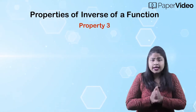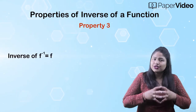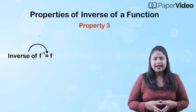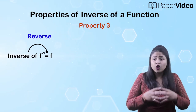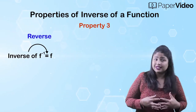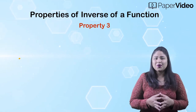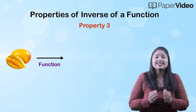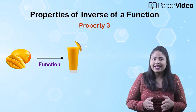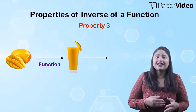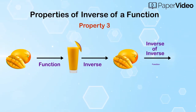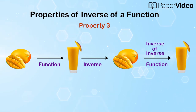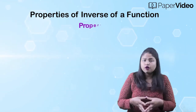According to the third property, the inverse of f inverse is the function f. This means that if we reverse the action of f inverse, we will get the original function f. In simple language, if a function is turning a mango into a mango shake, then the inverse function is turning the mango shake back to a mango. And the inverse of the inverse function is again turning the mango into a mango shake, which is the same work as done by the original function.